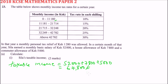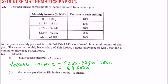That is the taxable income — all the money earned in that particular month. Then we go to Roman numeral two, which asks for the net tax payable by Sira in that month.